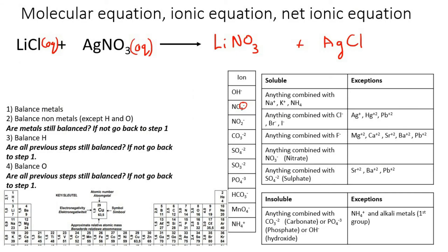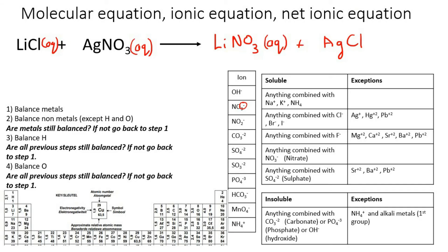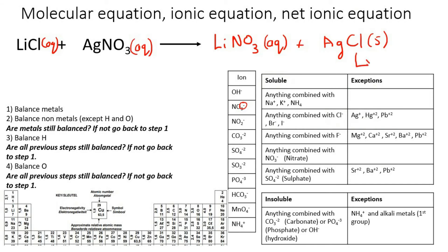Now let's check which product is a precipitate. LiNO3: all nitrates are soluble, so that's aqueous. AgCl: anything combined with Cl is normally soluble, except if you have Ag, Pb, or Hg. We've got Ag, so this is going to be a solid — a precipitate. This balanced equation is called your molecular equation.